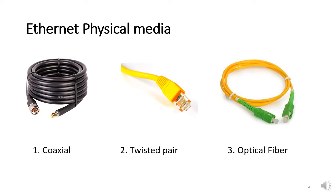Here I have collected images of different physical media. The first is coaxial cable, which was an earlier technology. We now commonly see the twisted pair Ethernet cable, also called RJ45 or LAN cable in common terms — this is the most widely used Ethernet cable. We also have optical fiber cable. So those are the three types of physical media.